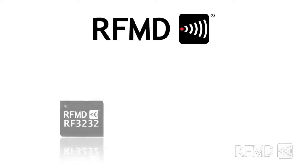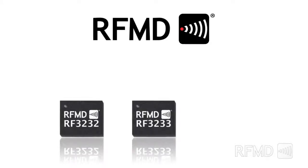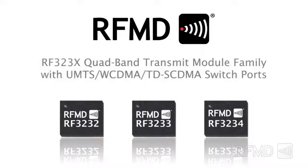RFMD's new RF3232, RF3233, and RF3234 quad band transmit modules are ideal for the final portion of the transmitter section in multi-mode 3G entry handsets and connected devices.